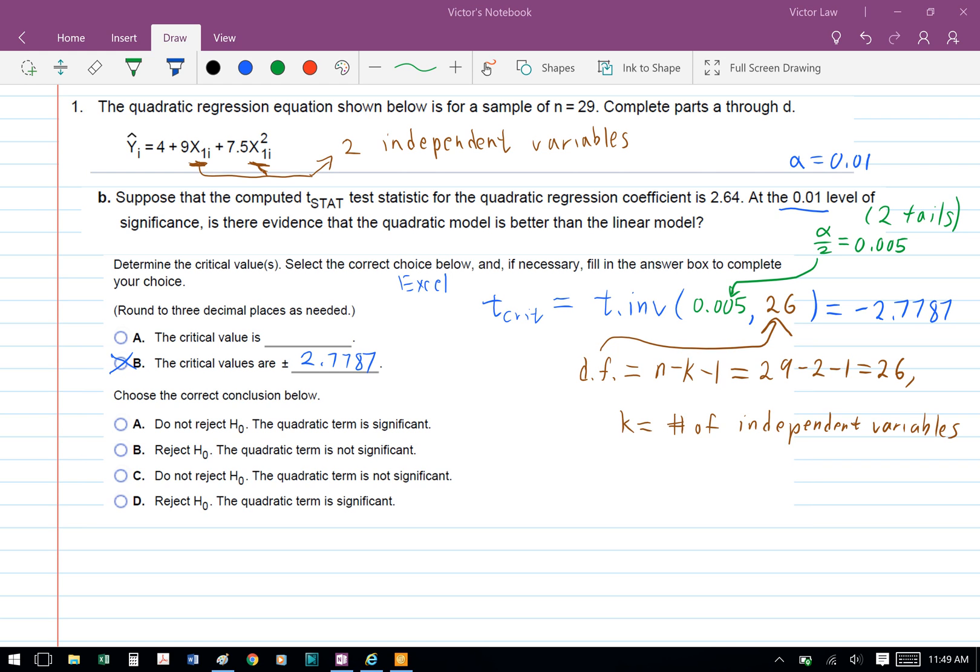So the degree of freedom, the formula for that is n minus k minus 1. N is the sample size, k is the number of independent variables, so we have 29 minus 2 minus 1 equals 26 for the degree of freedom.